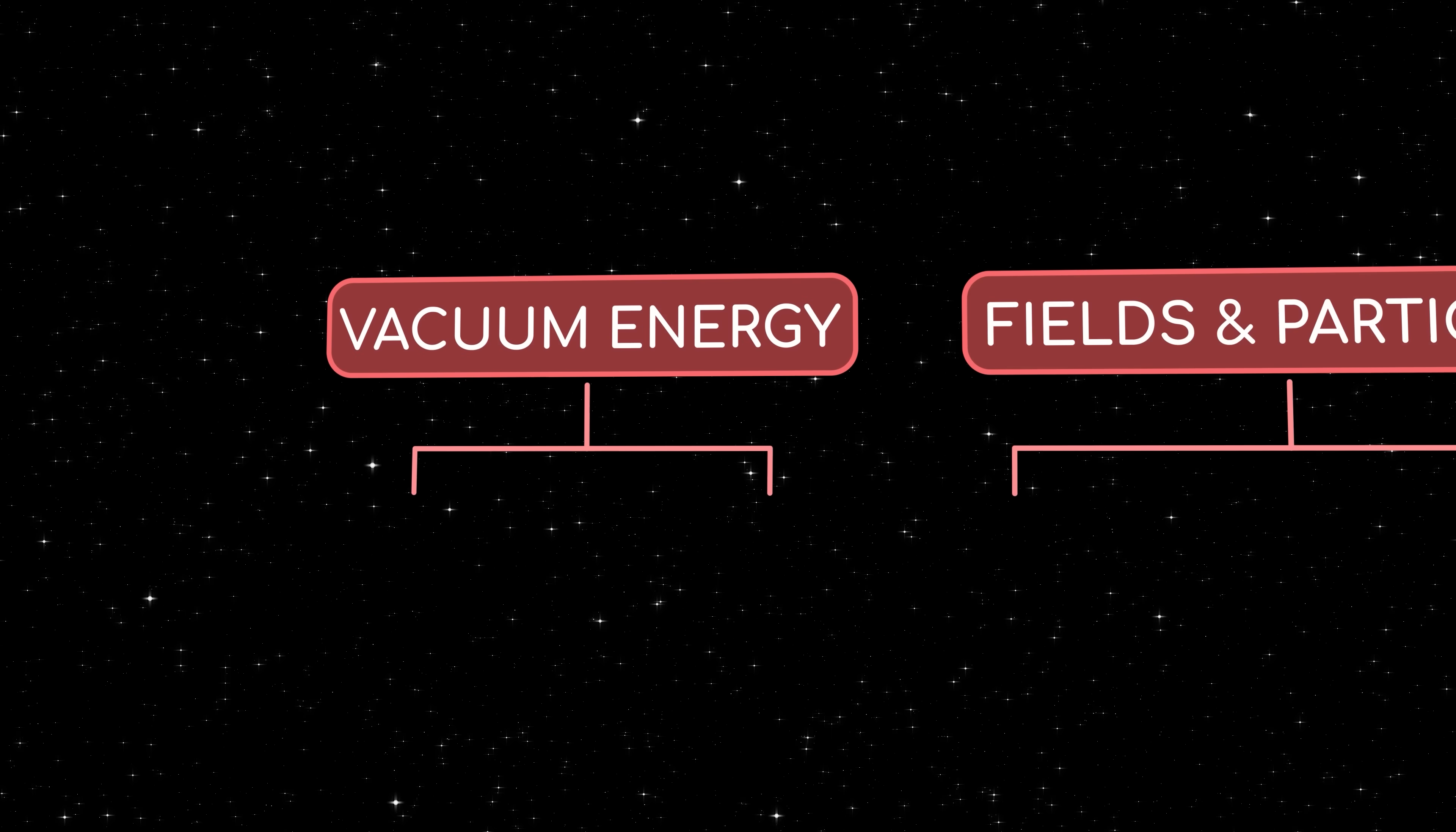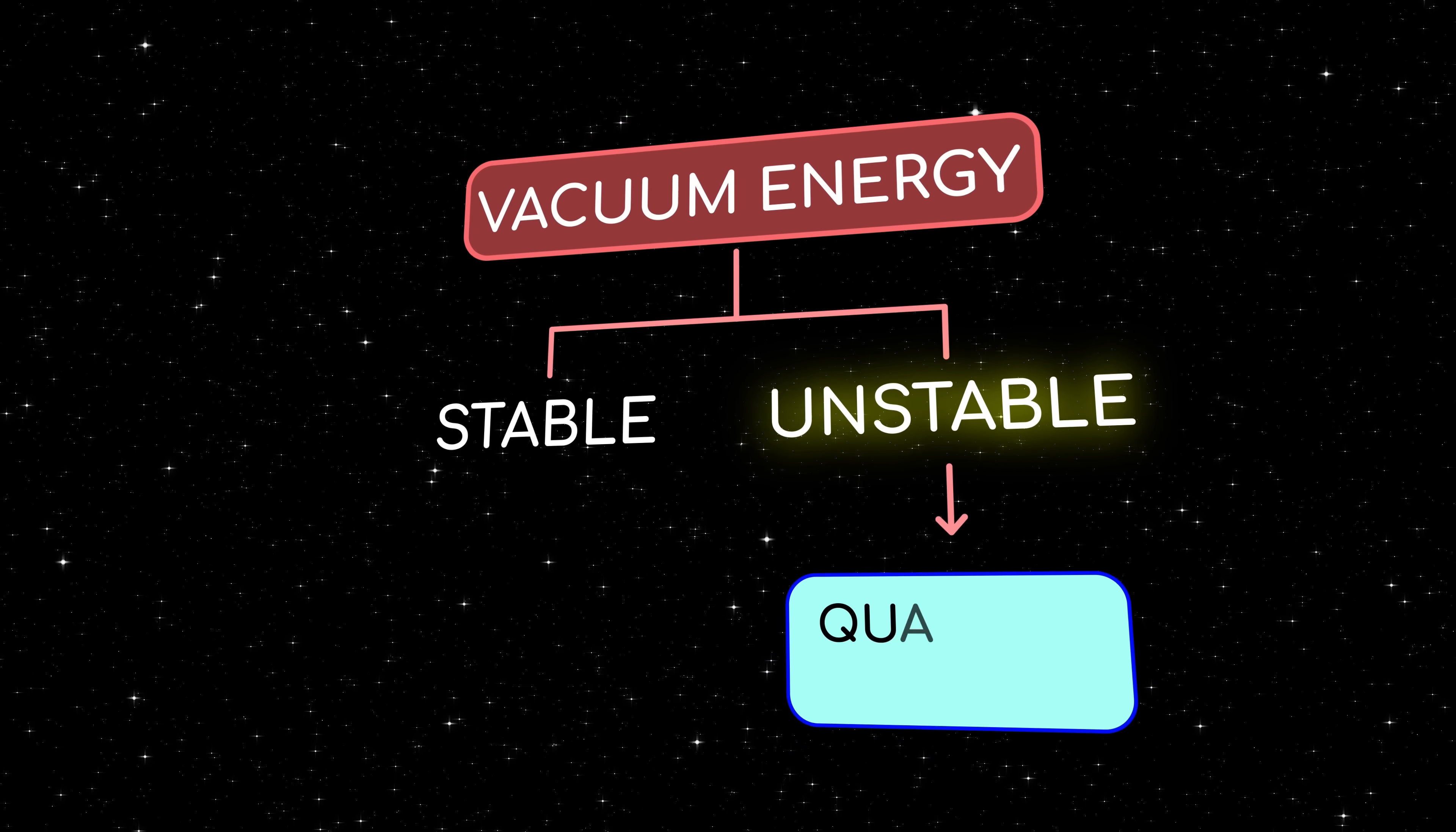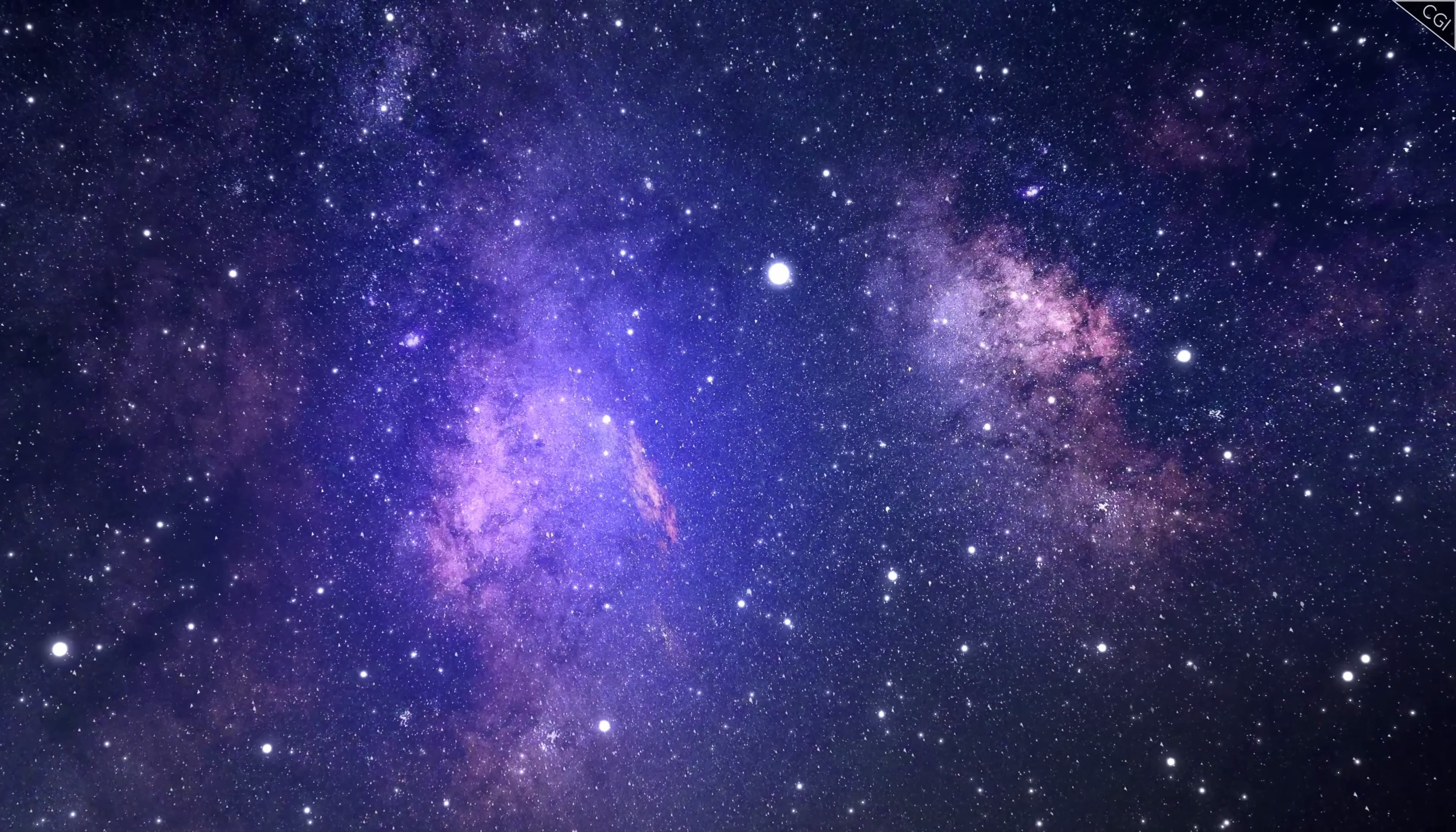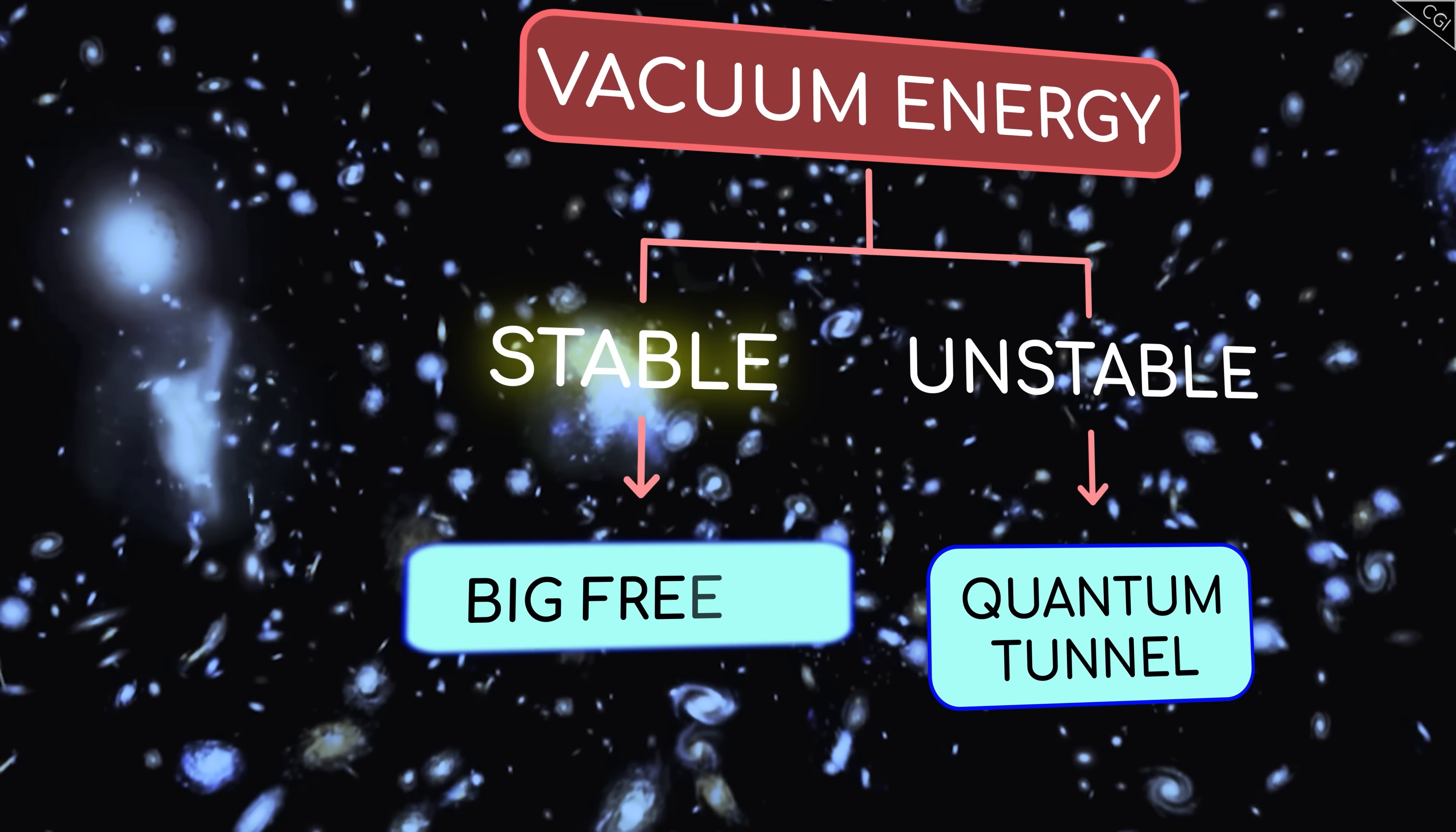On the vacuum energy side, we need to consider whether the vacuum itself is stable, or whether it can jump into a state of even lower energy through a process known as quantum tunneling. A stable vacuum is by far the simplest scenario. It means the dark energy will continue to exist for an eternity in the same form it takes on today. Our universe will accelerate forever, growing infinitely larger and colder in what's called the Big Freeze.